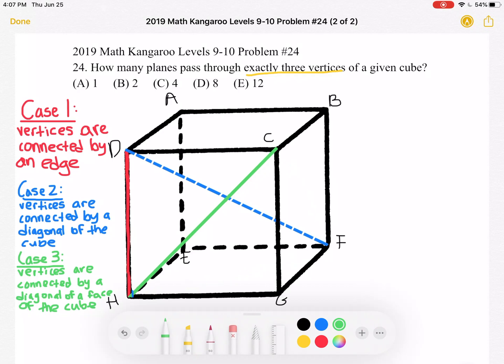Now let's keep looking at face d, c, h, g. We can choose d, g to be our first two points on that face and then we can choose either b and again this only goes through three vertices, or we could choose the two points d, g as well as point e.